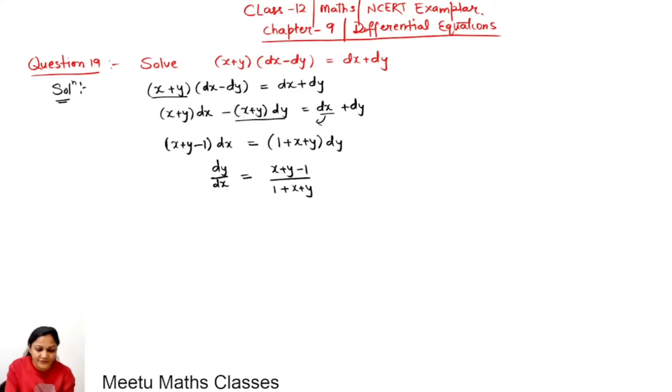Now here we can make a substitution. We can put x+y as z. So 1 plus differentiating with respect to x, 1 plus dy/dx can be interchanged with dz/dx. This implies dy/dx can be replaced by dz/dx minus 1. So 1 plus dy/dx will become dz/dx, and dy/dx will be dz/dx minus 1 upon this is z and this is also z.